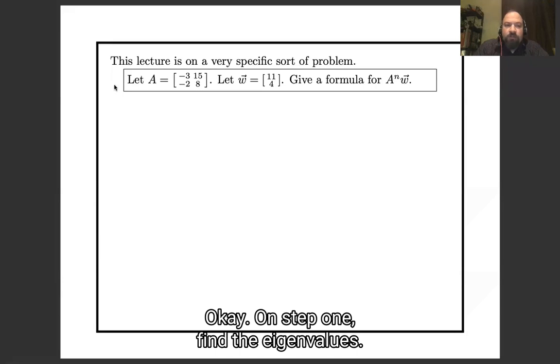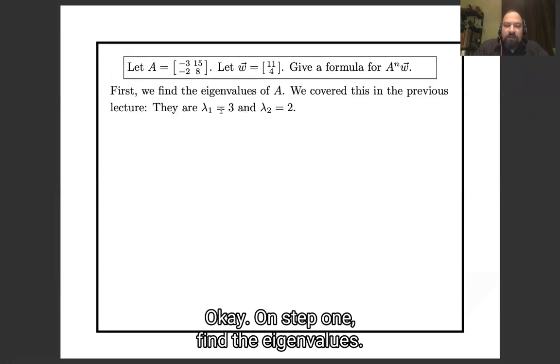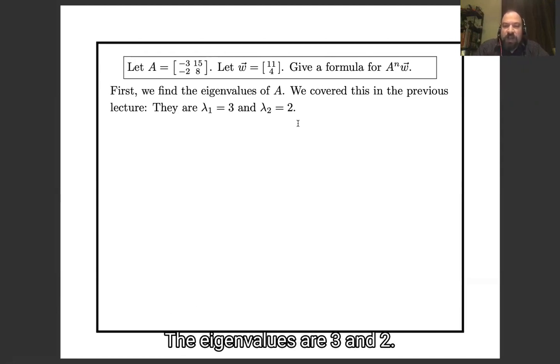Okay, well step one, find the eigenvalues. So this was in the previous lecture, and this is the same matrix as in the previous lecture. The eigenvalues are λ₁ = 3 and λ₂ = 2. We found those by computing the roots of the characteristic polynomial.